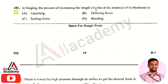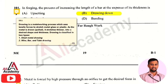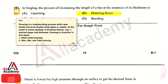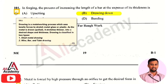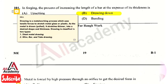The next question: in forging, the process of increasing the length of a bar at the expense of its thickness — the right answer is option 2, that is drawing down. Drawing is a metal working process that uses tensile force to stretch the metal. As the metal is drawn or pulled, it is stretched thinner. The drawing process is classified into two types: sheet metal drawing, and wire, bar or tube drawing.